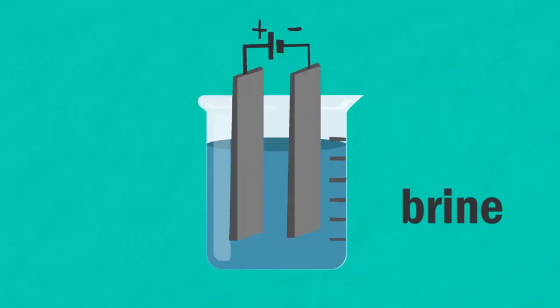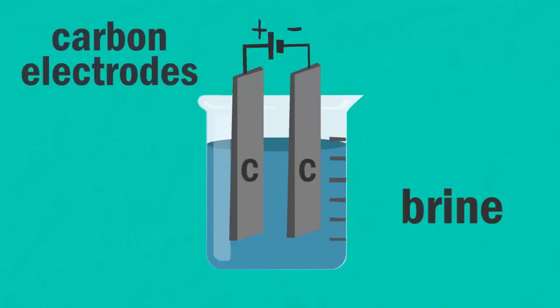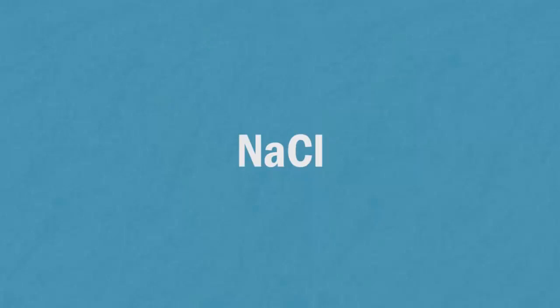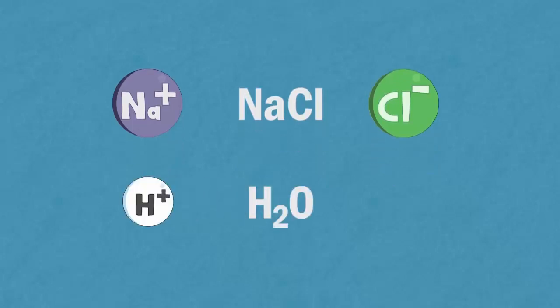We don't want the electrodes to become part of this reaction and so we use carbon electrodes. From the sodium chloride we have positive sodium ions, Na+, and negative chloride ions, Cl-, and from the water we have positive hydrogen ions, H+, and negative hydroxide ions, OH-.